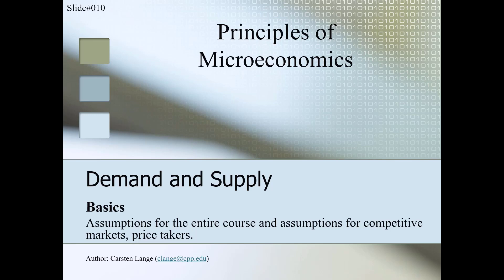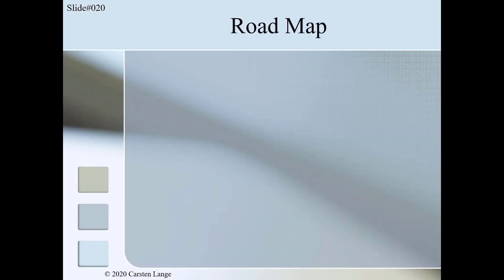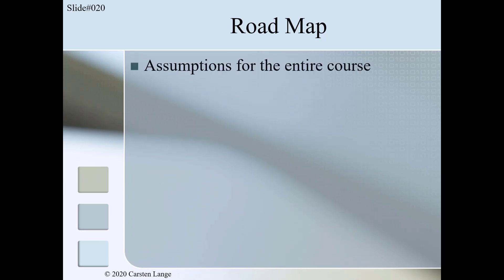Hello, welcome to Chapter 4: Demand and Supply. In segment 2 of the basic module we will talk about assumptions, competitive markets, and price takers. In the last segment we covered how important assumptions are in general. Here in segment 2 we will cover three main topics, and all three topics are indirectly or directly related to assumptions. In the first topic we will talk about assumptions which apply to the whole course, and which additional assumptions we use for a competitive market.